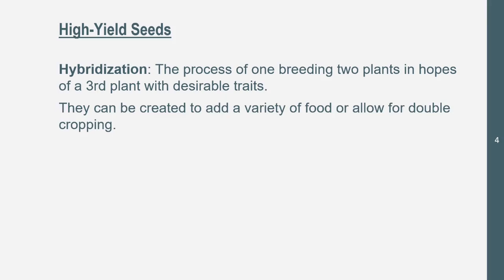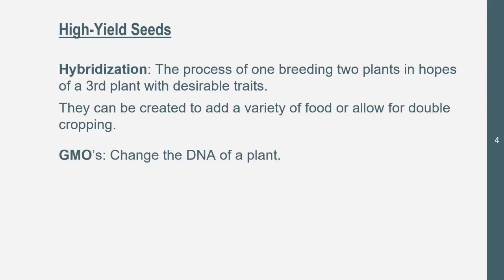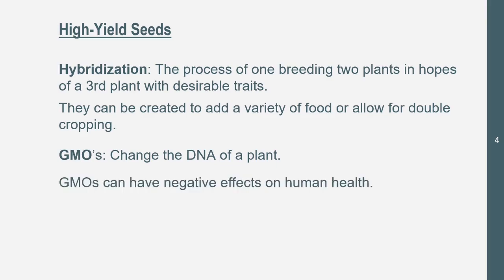This can be created to add variety of food to the markets, or to allow for double cropping, which is basically growing multiple plants on a farm. There's also GMOs, which change the DNA of a plant — very biotechnical. These change the DNA of a plant to give it desirable traits. GMOs can have negative effects on human health, so they can make diabetes and other conditions come quicker than they should.